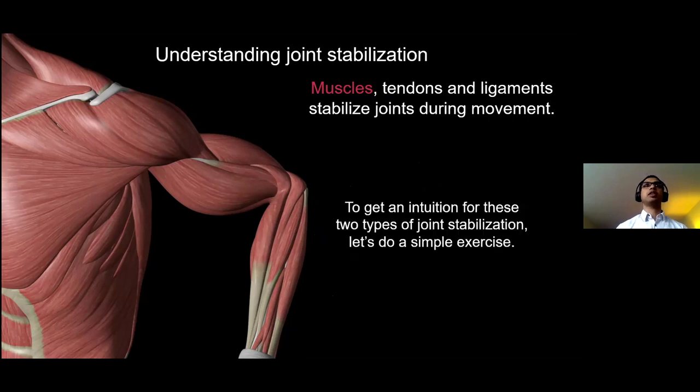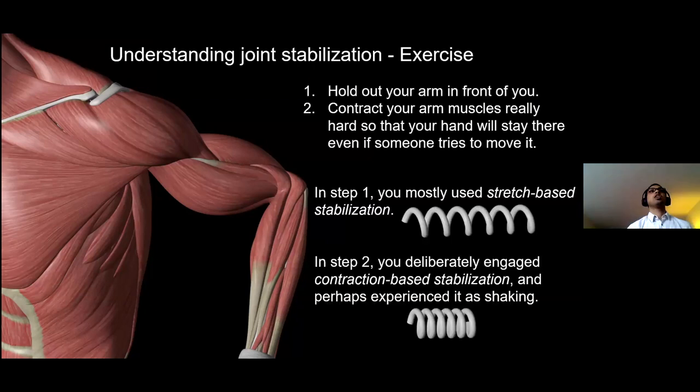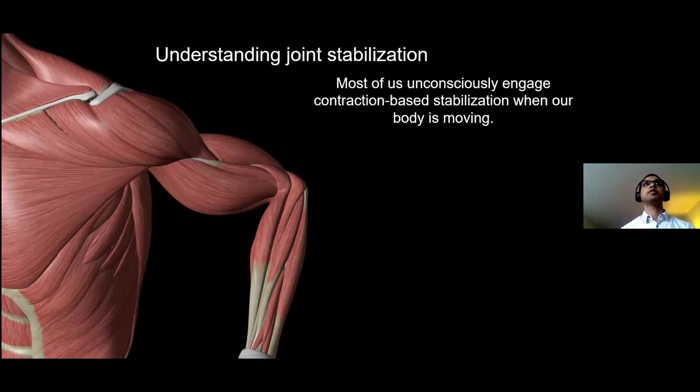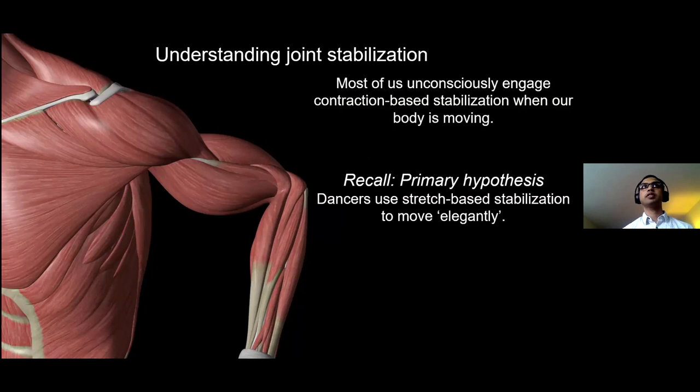Let's do a simple experiment to get an intuition for this. Hold out your hand and now contract all your muscles as hard as you can. In step one, you're mostly using stretch-based stabilization. In step two, you deliberately engaged contraction-based stabilization and perhaps experienced it as your arm shaking. Most of us unconsciously engage contraction-based stabilization when our body is moving. Recall that our primary hypothesis is that dancers somehow use stretch-based stabilization to move elegantly.